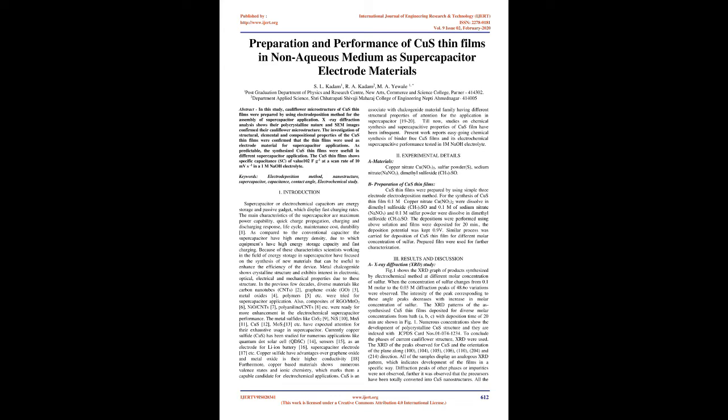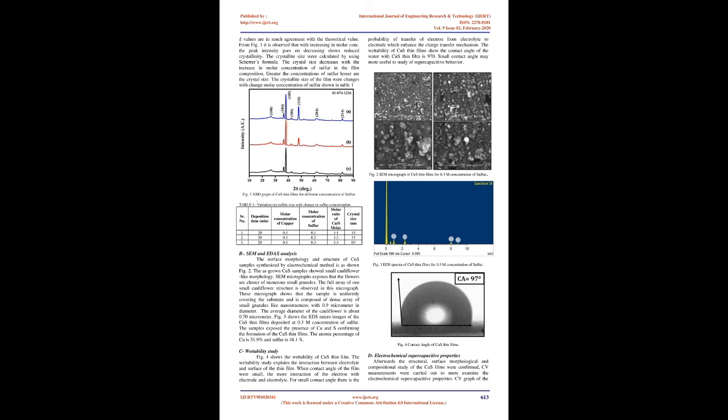Copper sulfide has advantages over graphene oxide and metal oxide in their higher conductivity. Furthermore, copper-based materials show numerous valence states and ionic chemistry, which marks them a capable candidate for electrochemical applications. CuS is an associate with chalcogenide material family having different structural properties of attention for the application in supercapacitor. Till now, studies on chemical synthesis and supercapacitive properties of CuS film have been infrequent. Present work reports straightforward chemical synthesis of binder-free CuS films and its electrochemical supercapacitive performance tested in 1M NaOH electrolyte.